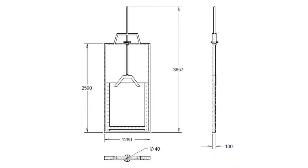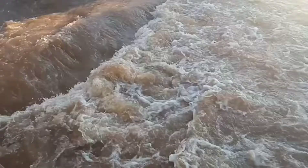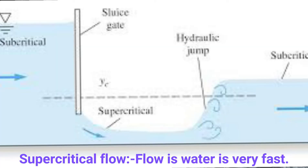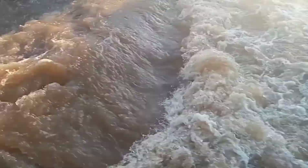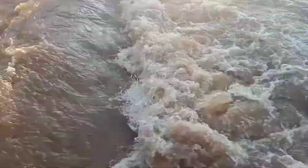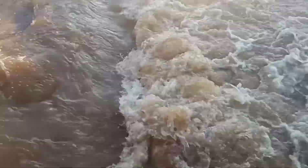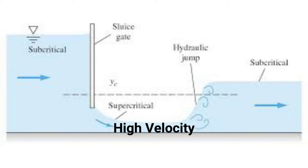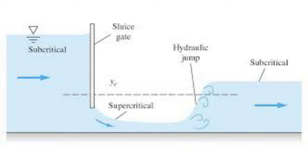When the gates are open slightly, the water rushes in with great velocity. This type of flow is called supercritical flow. Now, the importance of weirs will come into effect. The weirs help in transitioning the flow of water from supercritical to subcritical — that is, from high velocity to low velocity. This is called the hydraulic jump.